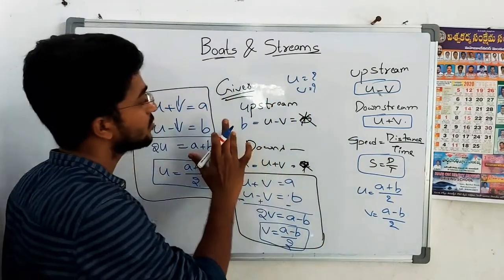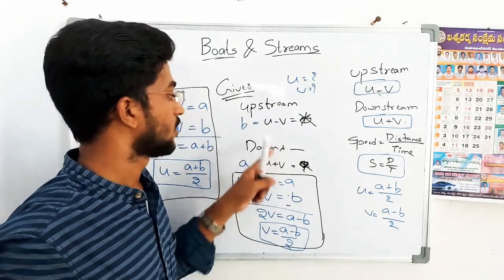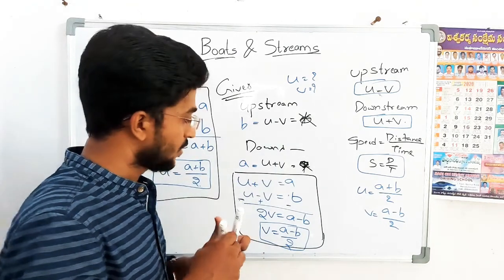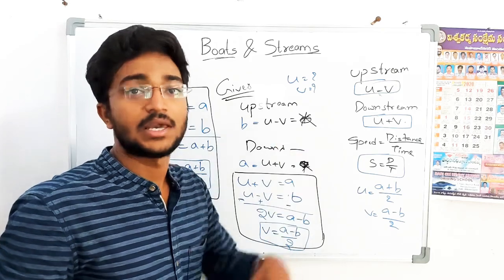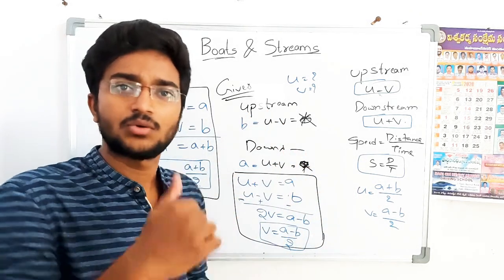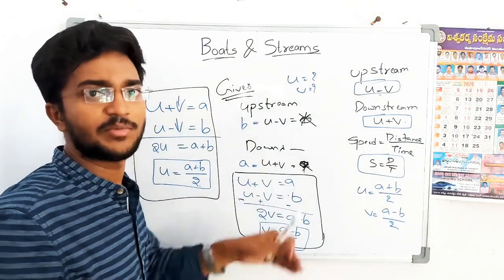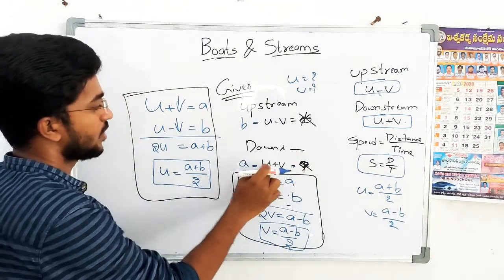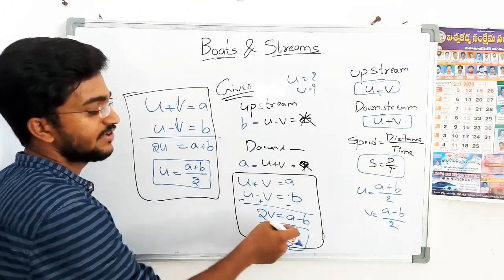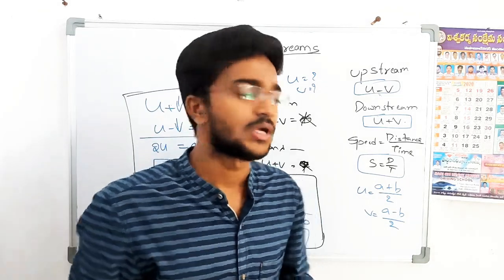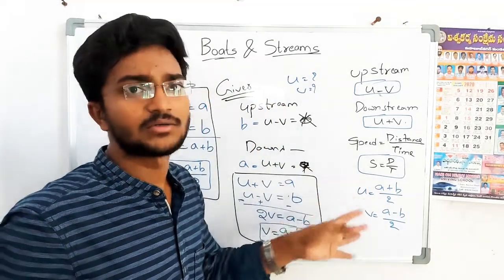We will now do an example using A and B. The general concept is: U plus V and U minus V. By adding these and dividing by 2, we get U. By subtracting and dividing by 2, we get V. This is the same concept applied to all problems.